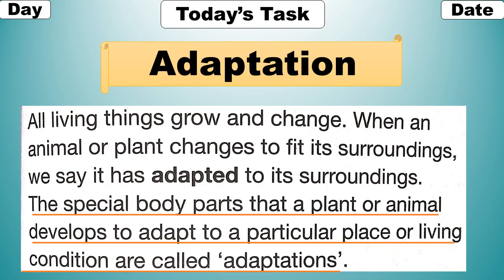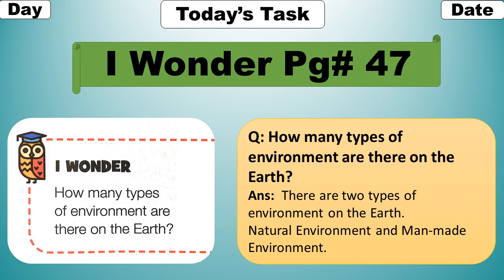Adaptation: all living things grow and change. When an animal or plant changes to fit its surroundings, we say it has adapted to its surroundings. The special body parts that a plant or animal develops to adapt to a particular place or living condition are called adaptations. Do you know what adaptation is? Special body parts of plants or animals that adjust themselves according to any place are called adaptations.